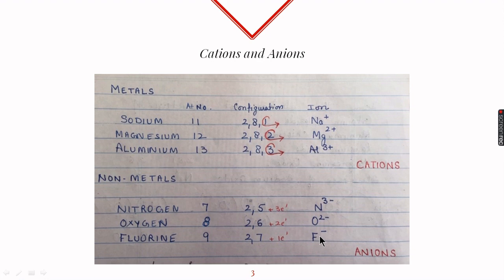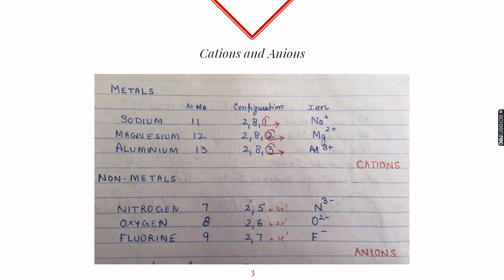We have noticed that metals lose one, two, or three electrons to become stable and they form cations. When a cation combines with an anion, since they are oppositely charged ions, there will be a strong force of attraction between the two.